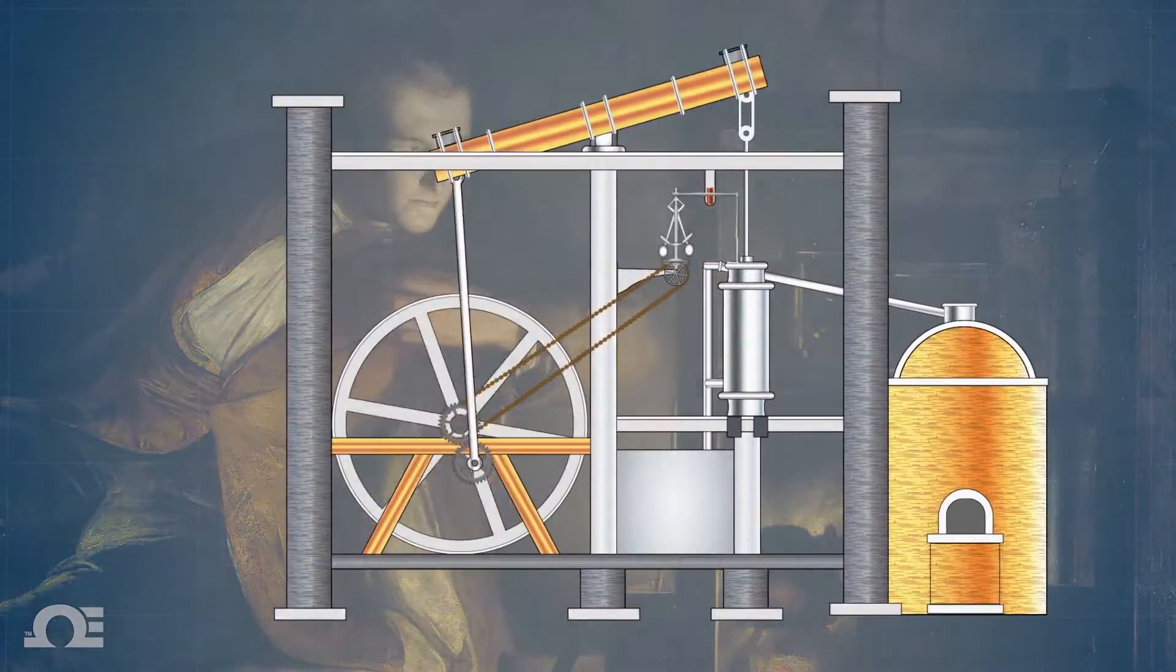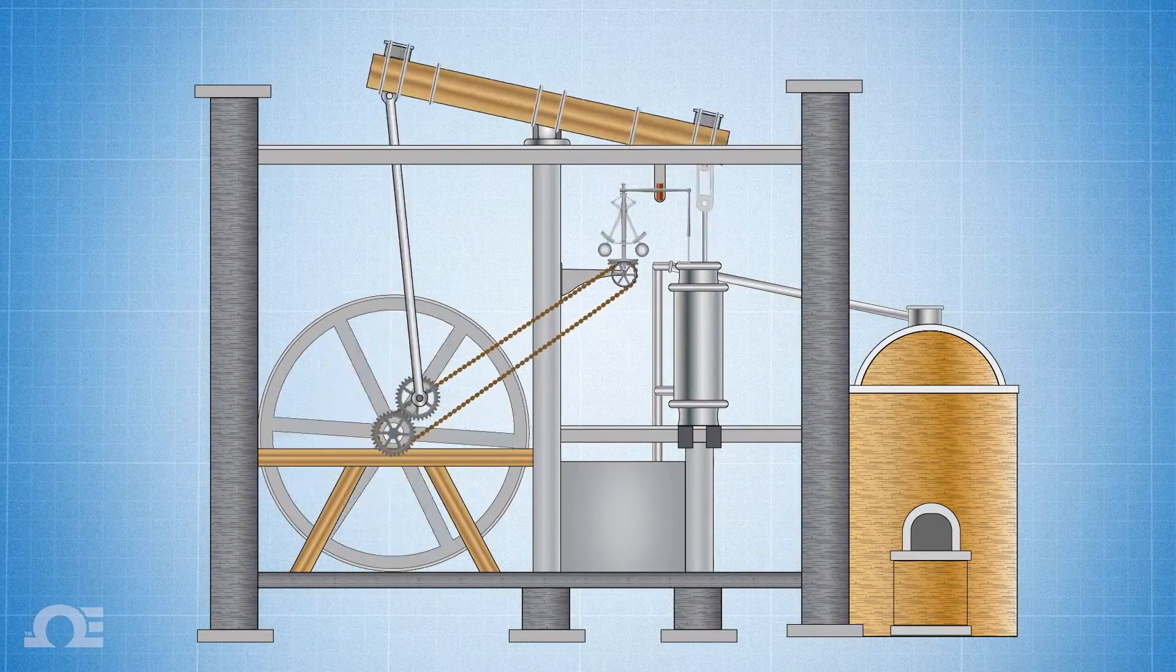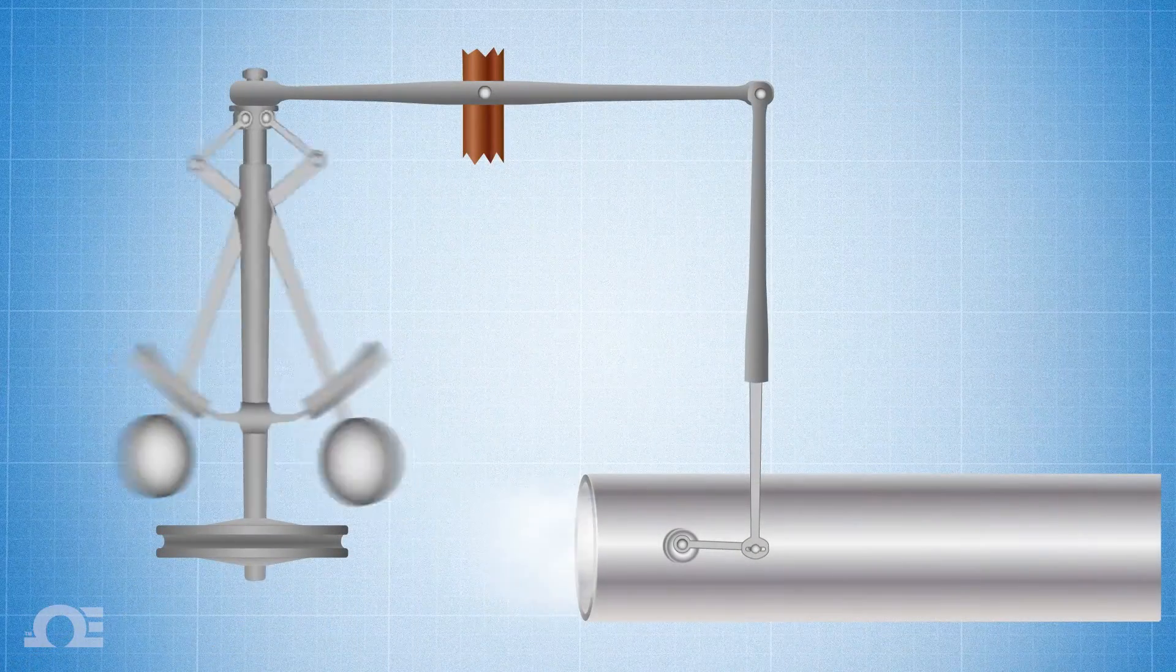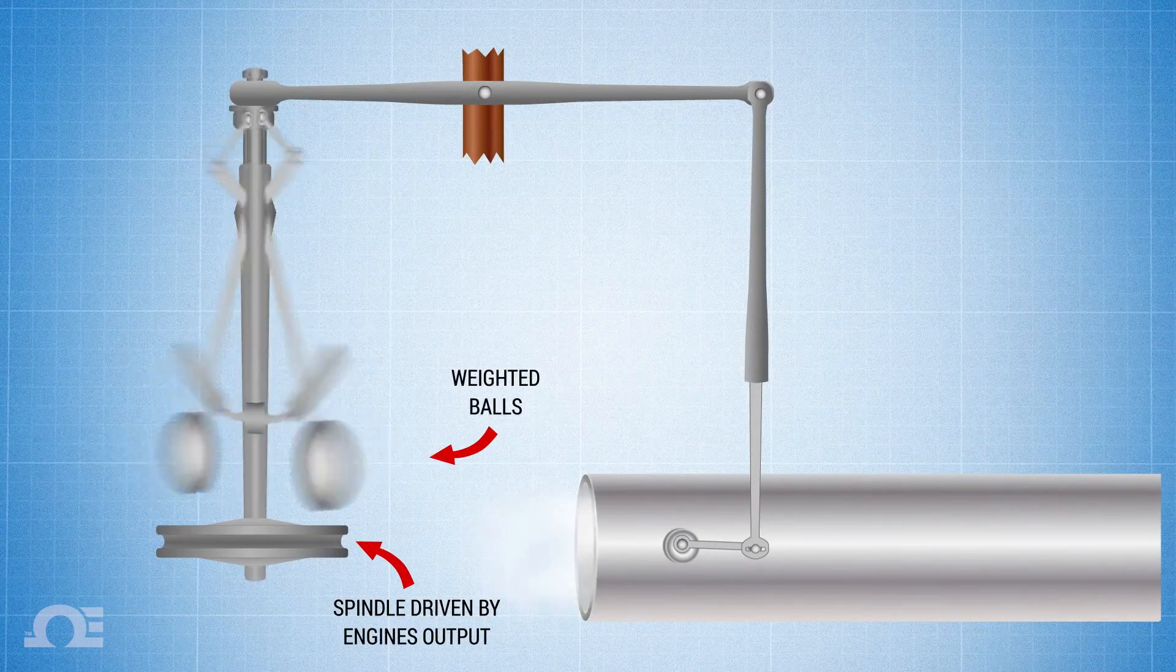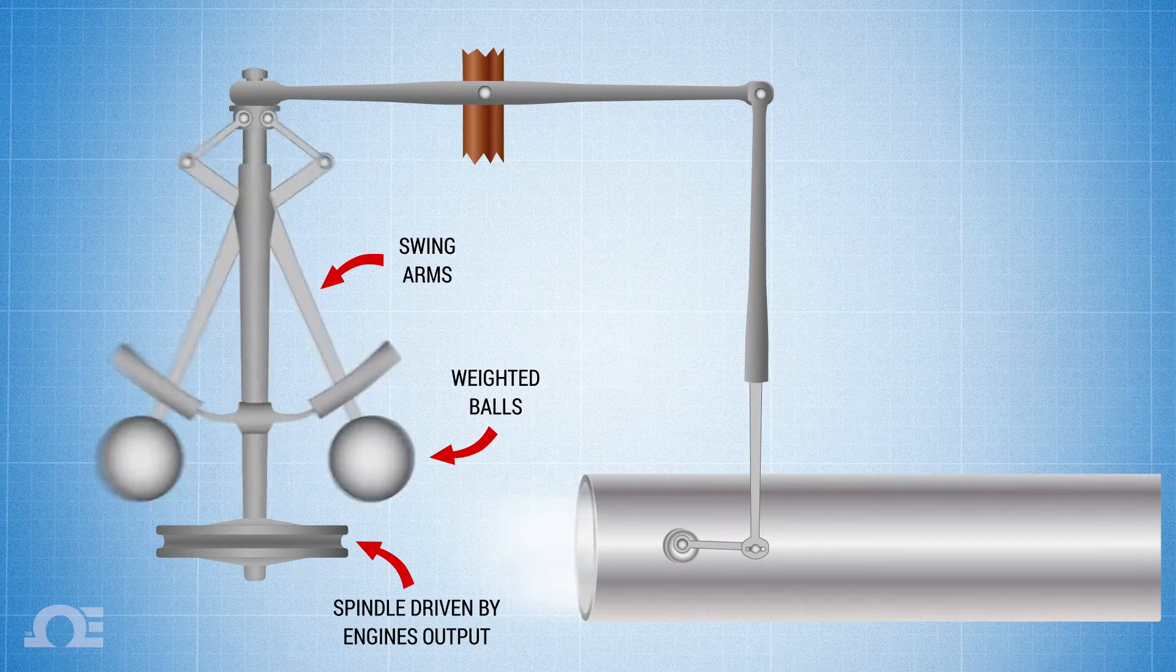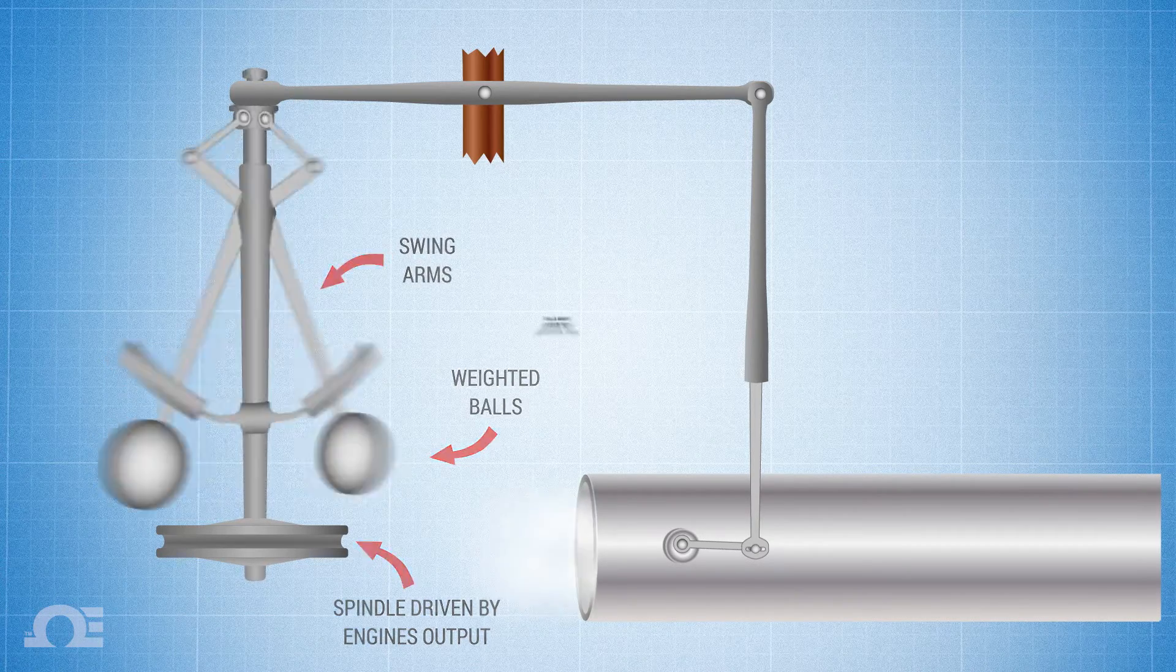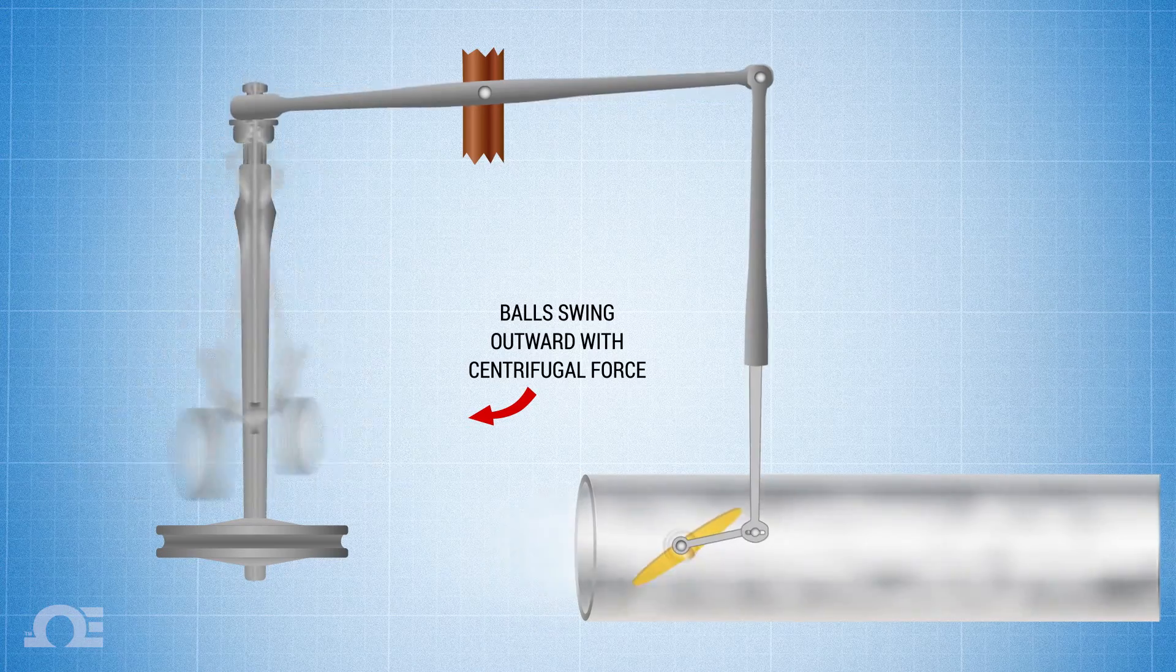Here's how he got the ball rolling, or spinning as it were. The output shaft of Watt's steam engine powers the spindle of the governor. Two weighted balls are attached to it with swing arms. As the engine turns faster, centrifugal force causes the balls to spin and lift outward.